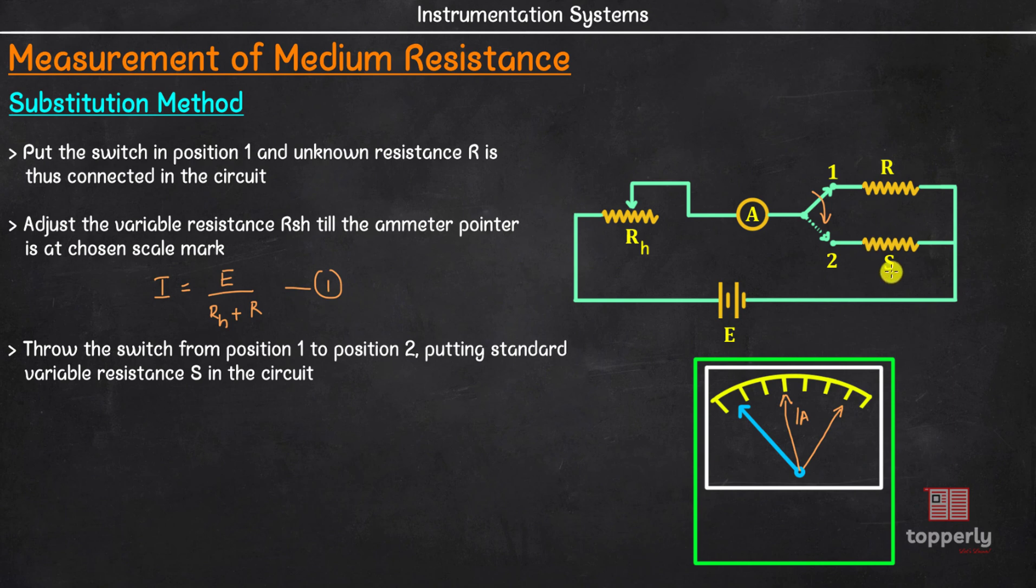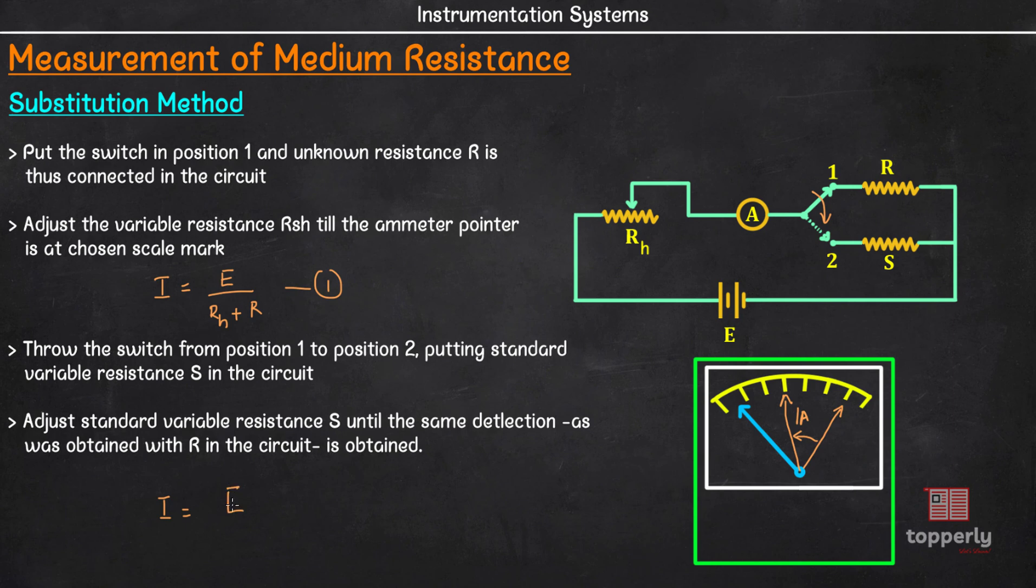As I already said, this S here is a standard variable resistance. Like a decade box. This means that, we can adjust the value of S to any desired value of our choice. So in the final step, we are adjusting the magnitude of S until the current reaches back to its previously set value. That is, in our case, 1 A. So we can write, current in the circuit I is equal to E by RH plus S. And let's name it as equation number 2.